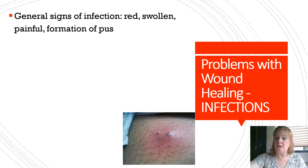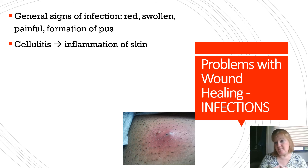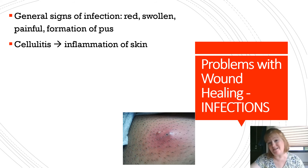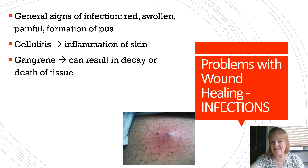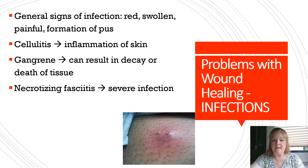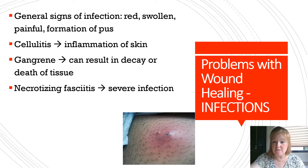Infections are another complication. General signs of infection are redness, swelling, pain, and pus. Cellulitis is an inflammation of the skin that can occur somewhere other than the wound site — for example, you injured your hand but have cellulitis in your leg. Gangrene results in decay or death of tissue, which turns bluish, greenish, or even black. Necrotizing fasciitis is a severe infection — flesh-eating bacteria — requiring removal of all affected tissue, resulting in severe scarring or amputation. Gangrene can also result in amputation.